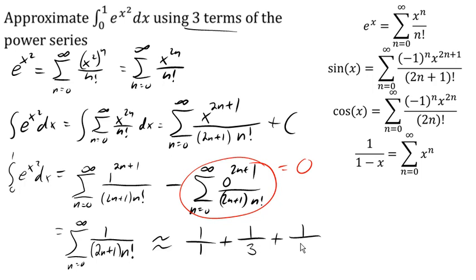And so there are three terms of my series. And those add up to 43 thirtieths, or about 1.433.